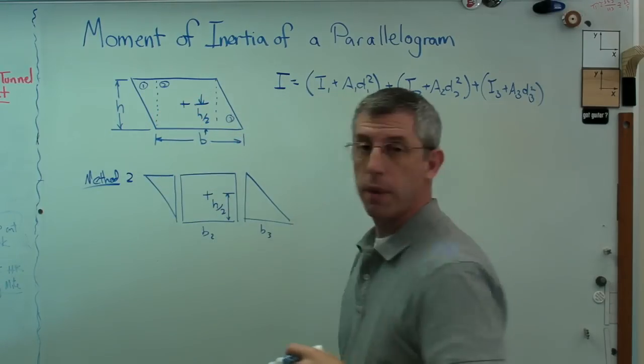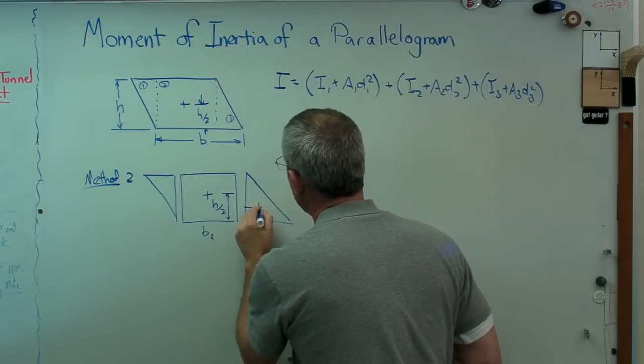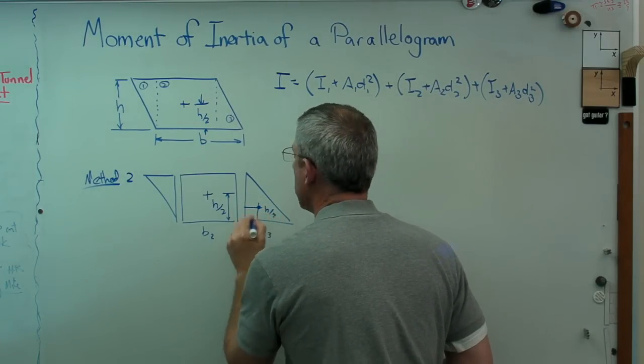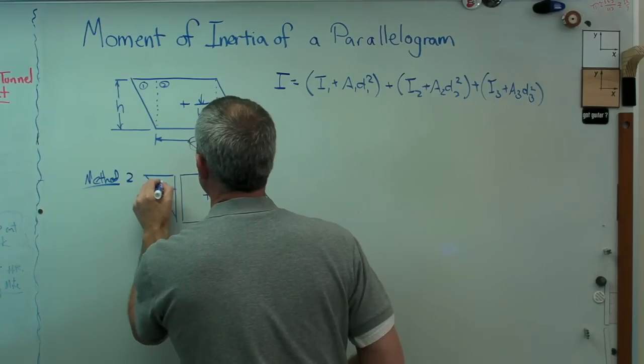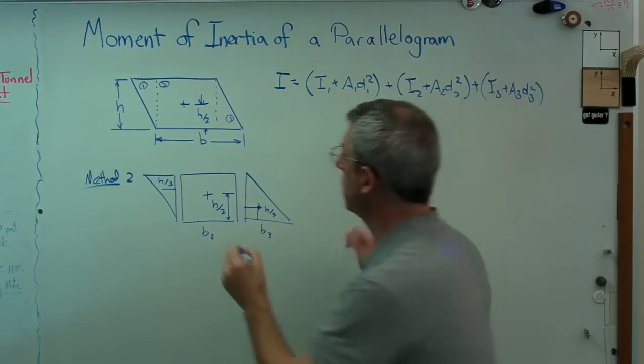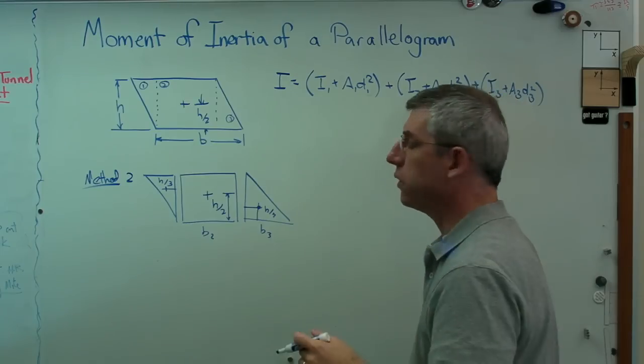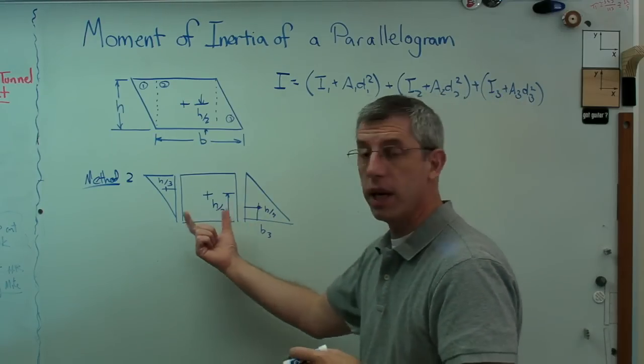Now the only problem here is the centroid of a triangle is a third of the way in there, so that's h over 3 in that direction and that's h over 3 as well. Put the centroid in there, so they don't all line up again when I break it up into pieces.